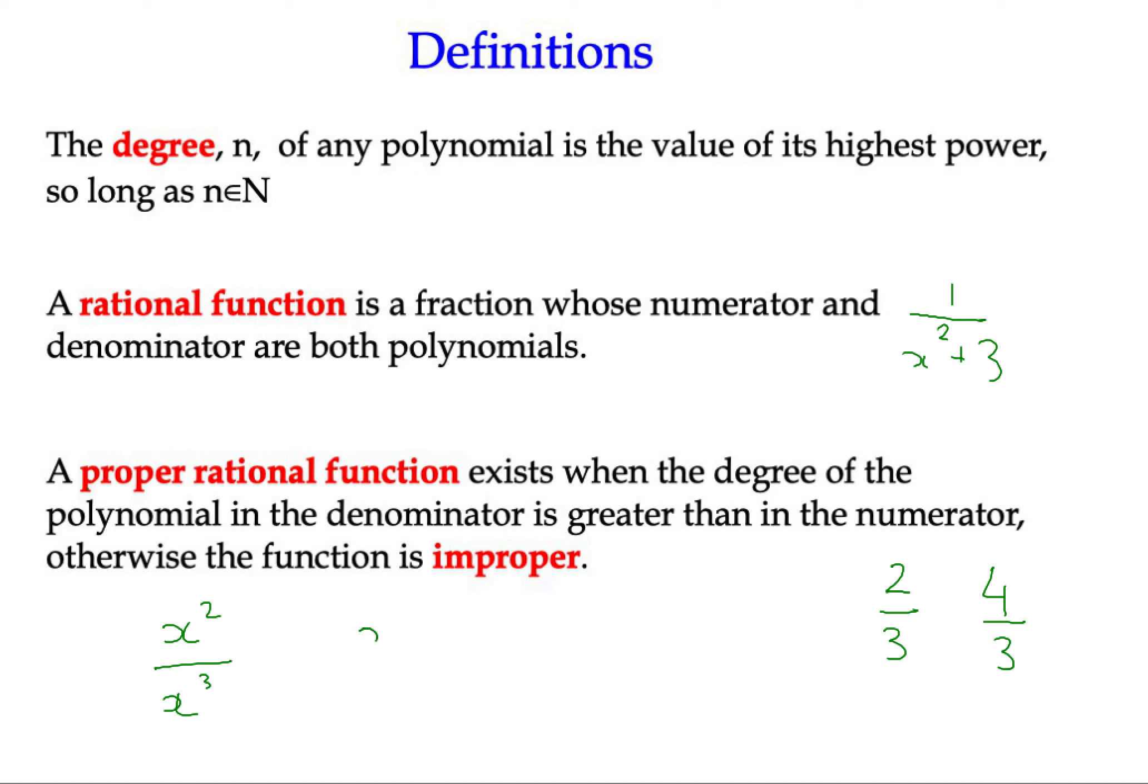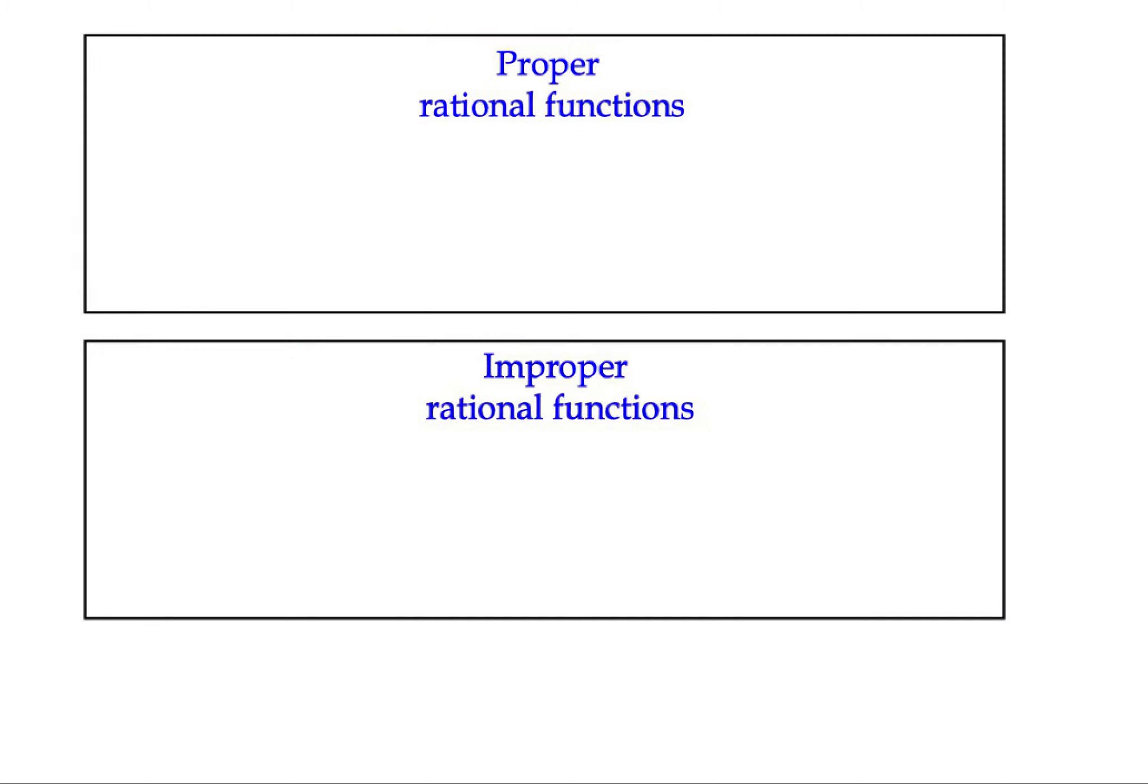In other words, the degree of the denominator is bigger than on the numerator. If I flip them around and x cubed over x squared, then that becomes top-heavy, effectively. The degree on the numerator is bigger. So it becomes an improper rational function. And it's really important because we can't actually find partial fractions of improper rational functions. It's got to be proper. And that's a really important point.